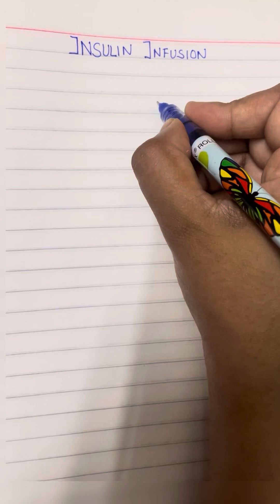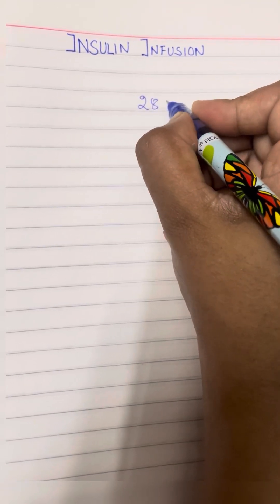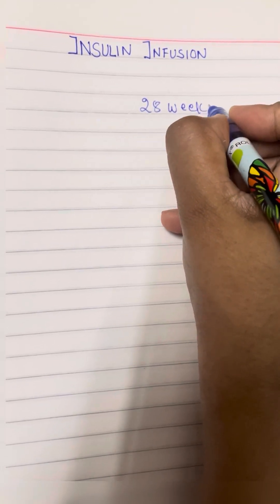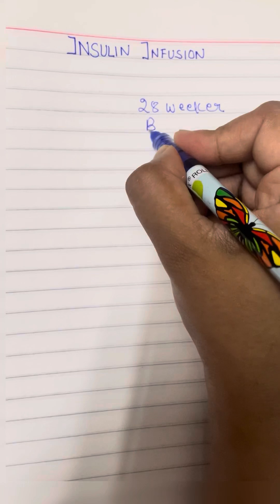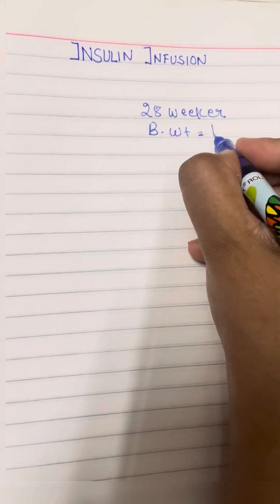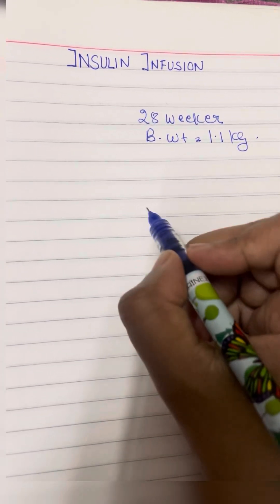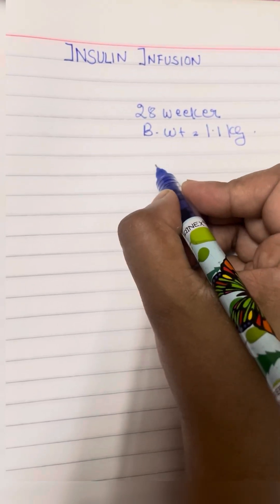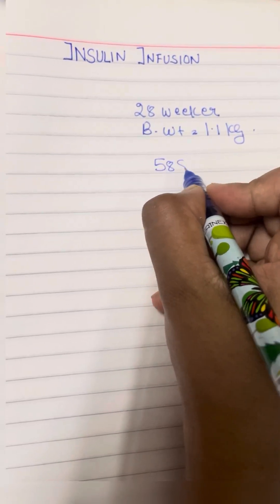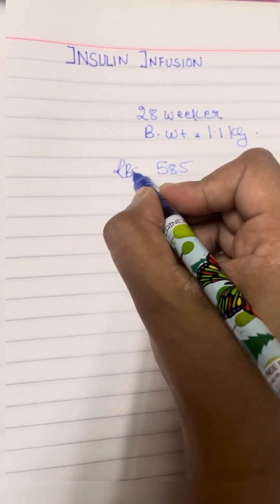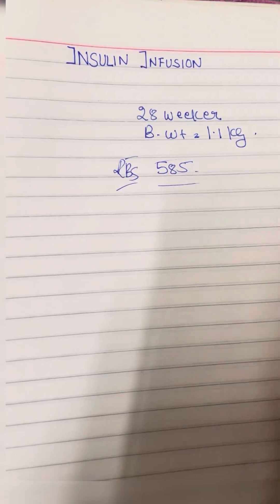Hello, let us learn how to make insulin infusion. Insulin infusion is very essential in an ICU. Let's assume we have a preterm 28-week baby with a weight of 1.1 kg and a sugar level of around 585.